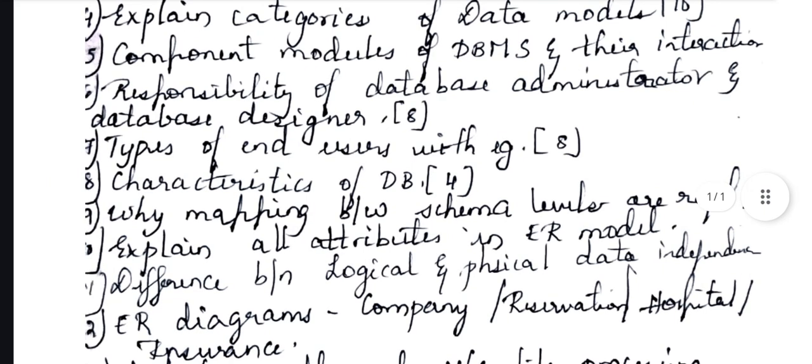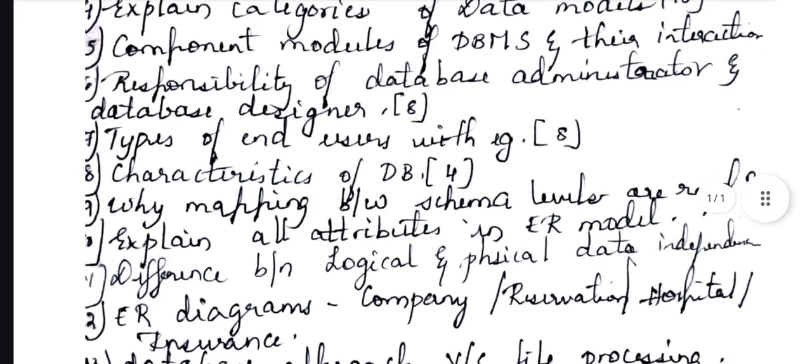For characteristics, you do not need to prepare detailed explanations — just know what the characteristics are. It is only asked for four marks, so that is enough. Then comes: why is mapping between schema levels required? This will be asked for two to four marks.